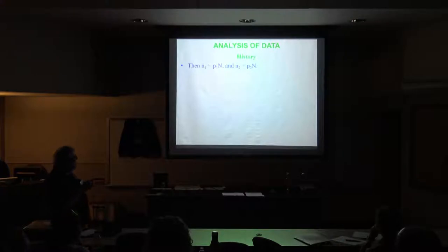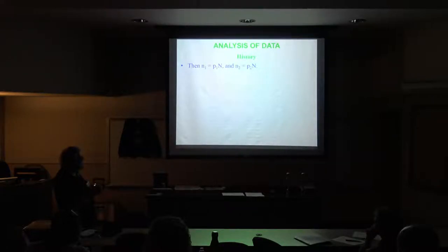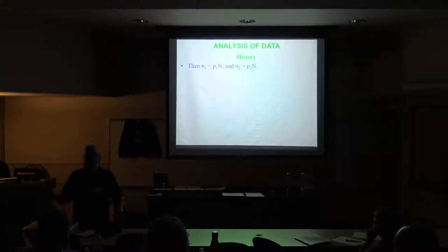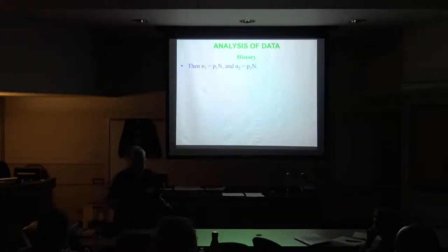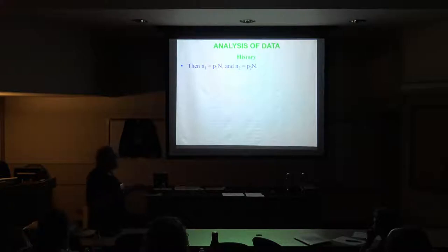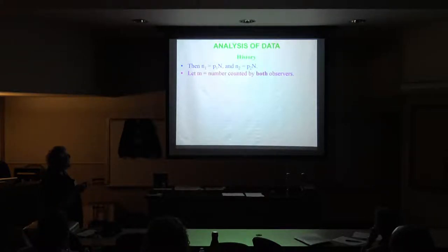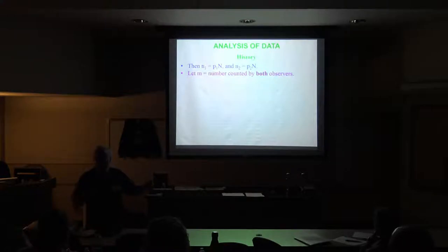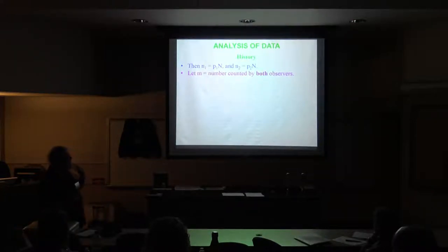The number the first person sees is his probability factor times the total. Rearranging the equation: n₂ equals p₂ times N. The neat thing about this equation is that once you determine what this factor is for a person, it seems to apply throughout the evening, from one night to the next, and maybe even from one year to the next. If somebody typically sees 85 percent of the meteors, that's part of his qualifications for observing. M is the number counted by both observers in common — one sees it, the other does or doesn't.